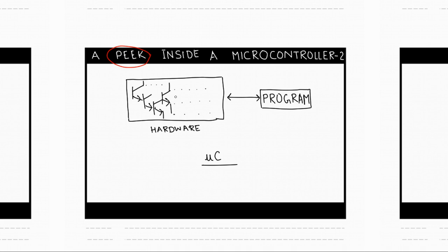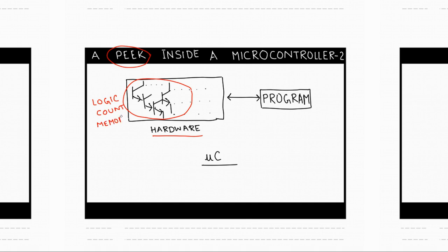In the last video we saw how a microcontroller contains thousands and thousands of transistors which can combine together to form hardware that can perform different logical functions — functions like AND, OR, NOT, NAND and so on — or functions which can count time or events. Transistors can also combine together to form memory which can store data and retrieve it when asked for. We also saw how a program inside a microcontroller is responsible for giving instructions to the hardware over what to do and in what order. This was a pretty low level abstraction for a microcontroller.